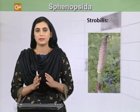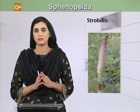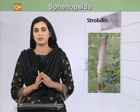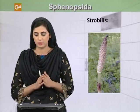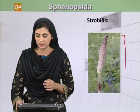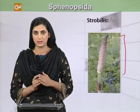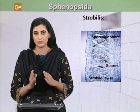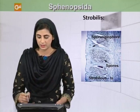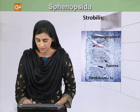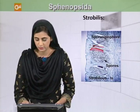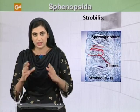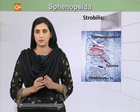So, we know that the sporangiophore bears an organ called the sporangium, and these sporangia aggregate to form a strobilus. You can see the figure of the strobilus here. The cross section of the strobilus shows structures called sporangiophores, which bear spores inside them, and they aggregate to form the strobilus.